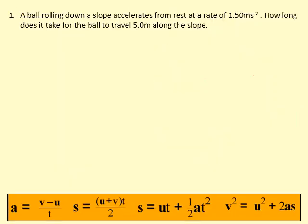In this question, a ball is rolling down a slope and it accelerates from rest at a rate of 1.50 meters per second squared. How long does it take for the ball to travel five meters along the slope? So it starts from rest. So that means its initial velocity is zero. You can see they haven't actually told you that, but that's where the information is.